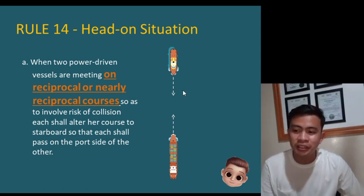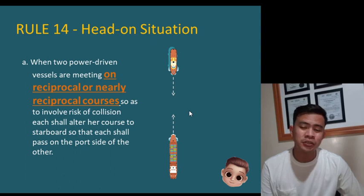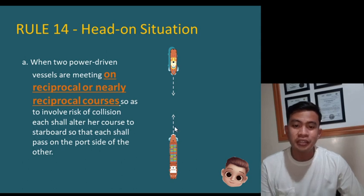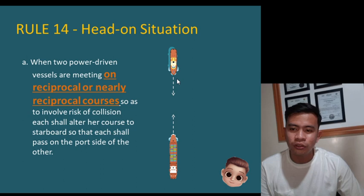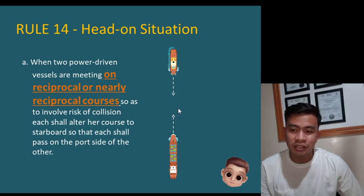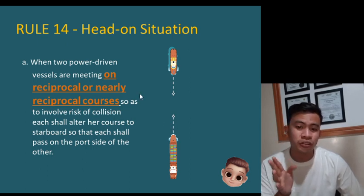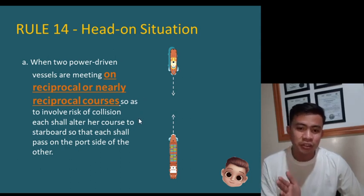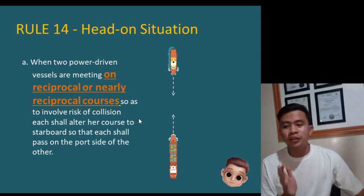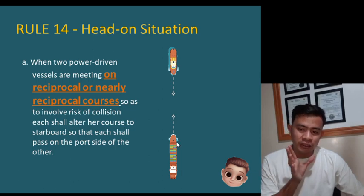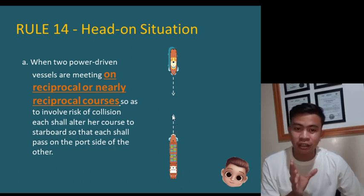When we say head-on situation, two power-driven vessels are meeting on or nearly reciprocal courses. For example, if one ship is heading north at 000 degrees and the other is heading south at 180 degrees, as they continue on their courses there is a risk of collision. This situation is called a head-on situation — they are on reciprocal or nearly reciprocal courses and as time goes by, there is a risk of collision.